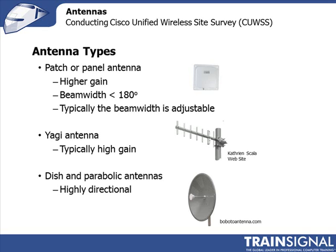Yagi antennas are very directional. A common use case is in a warehouse where you want to focus the beam down an aisle and get coverage just along that path, without worrying about covering where the boxes are stored. The next example is the parabolic dish, which comes in various shapes including grid-style dishes. The signal comes out of the radio head, bounces off the dish, aligns into parallel rays, and forms a highly directional beam. These are commonly used for point-to-point connections, such as bridging between two buildings in a mesh or bridge network.